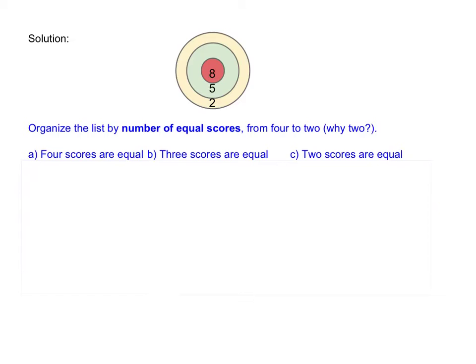We have cases from four equal scores to two equal scores. Why from four to two? Can we have a case where only one score is equal, meaning all scores are different? Why do we stop at two? Well, we are throwing four darts and we only have three different score regions. So if four darts land somewhere, at least one region must be repeated — that's why we have cases of four equal, three equal, and two equal scores. Once you list the cases, continue to populate the data.